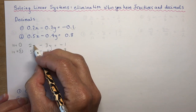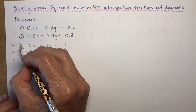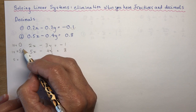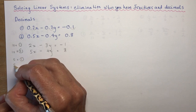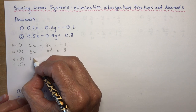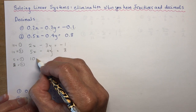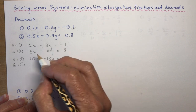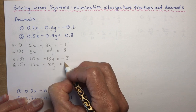I'm going to go with 10 because that's nice. I'll multiply equation 1 by 5 and equation 2 by 2. So equation 1 times 5 gives 10x minus 15y equals minus 5, and equation 2 times 2 gives 10x minus 8y equals 16.